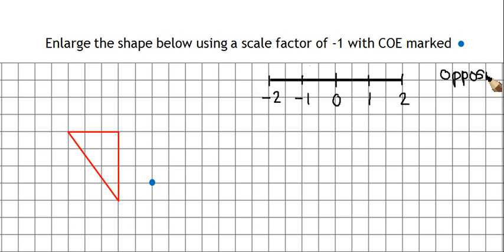Whatever direction we were going in to start with, as soon as we put a negative sign in front, we end up reversing it. If we were counting up 1, as soon as we put a negative sign in front, we end up counting down 1 instead. The process is still the same.